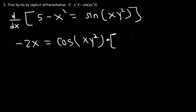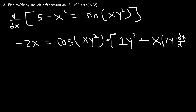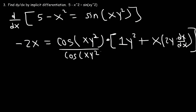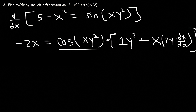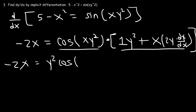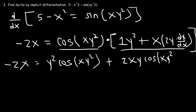The derivative of the first part x is 1, times the second part y squared, plus the first part x, times the derivative of the second part. The derivative of y squared is 2y times dy/dx. So we need to isolate dy/dx. I'm going to distribute cosine. So negative 2x equals y squared cosine(xy²), plus 2xy cosine(xy²) times dy/dx.